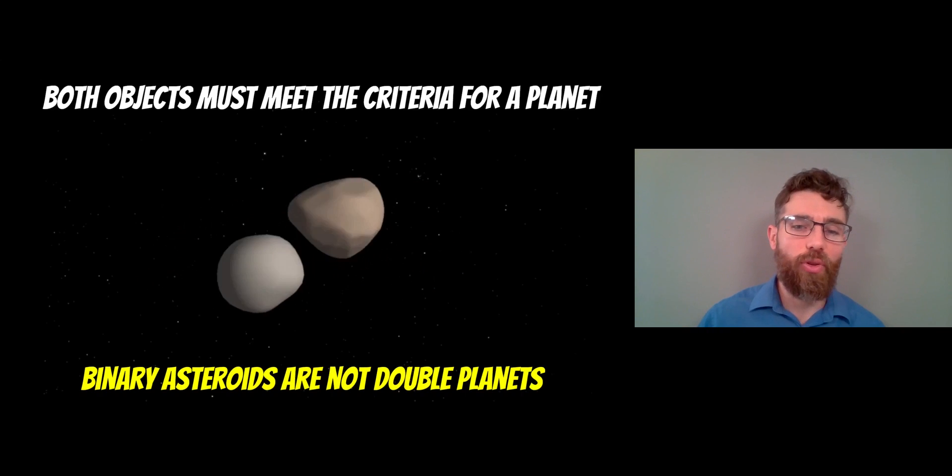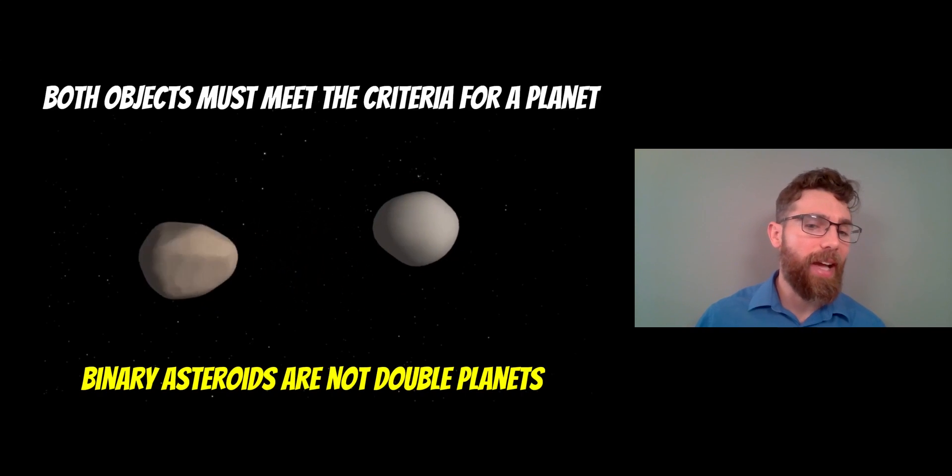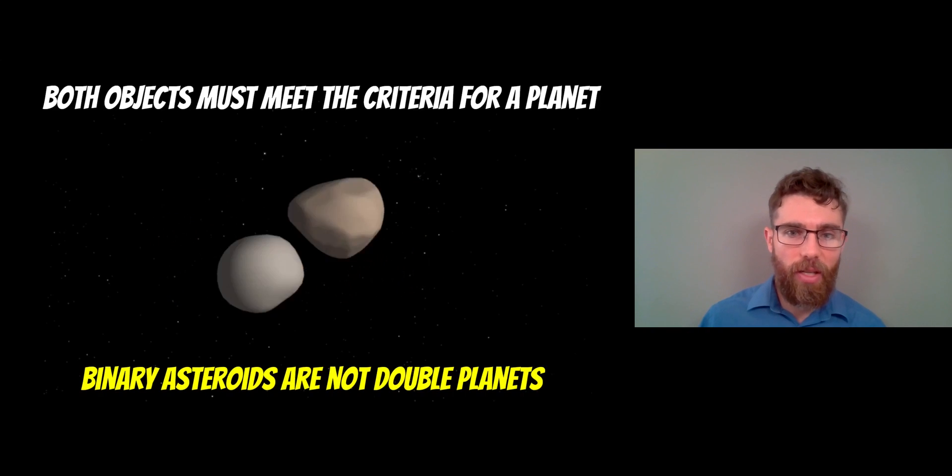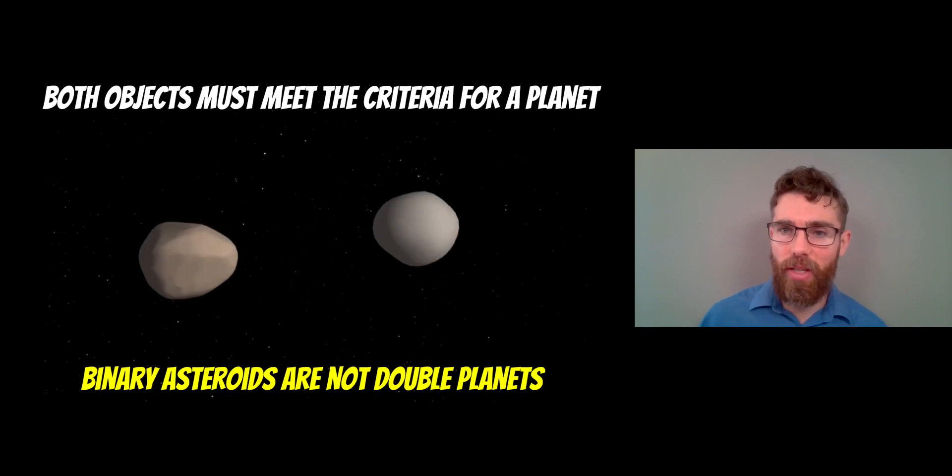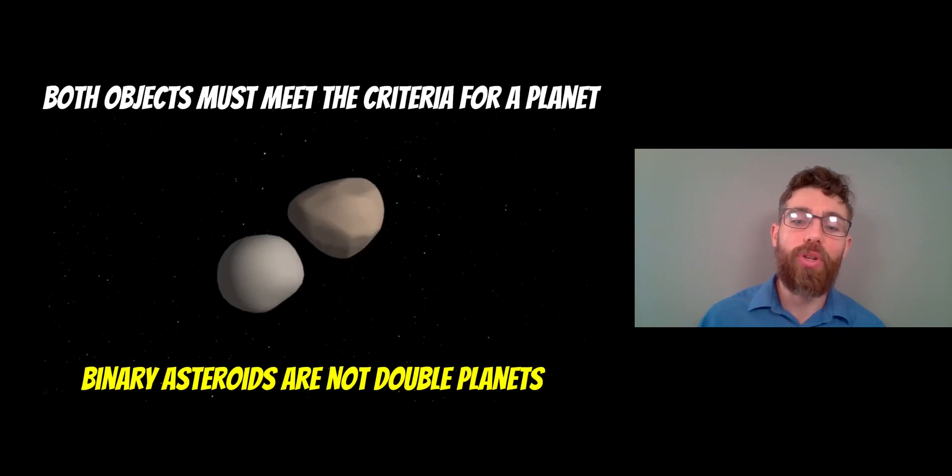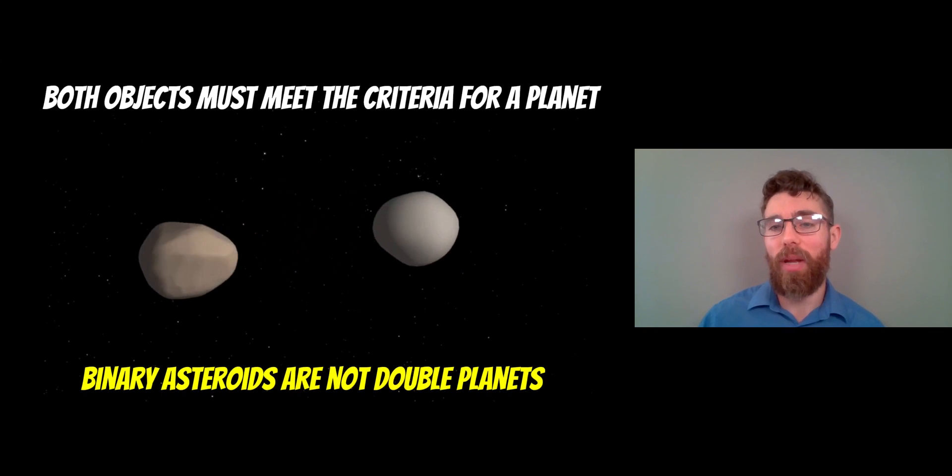And here's a binary asteroid orbiting a common center of mass. They might be orbiting the sun, so they meet one of the criteria. These ones here obviously don't meet any of the other ones. But you could still have a spherical shape, but it wouldn't clear out a gap. So then it wouldn't meet the double planet criteria.